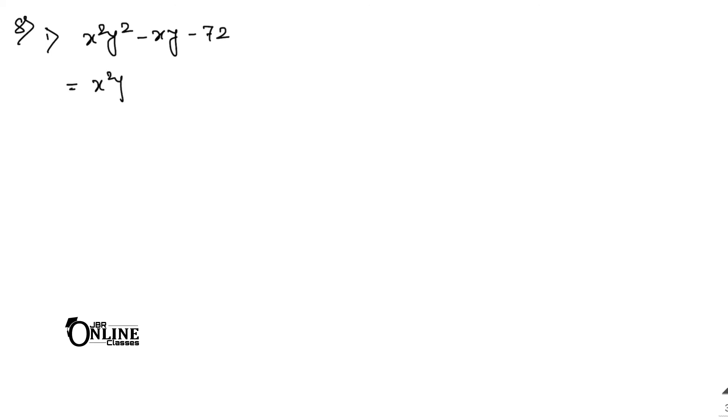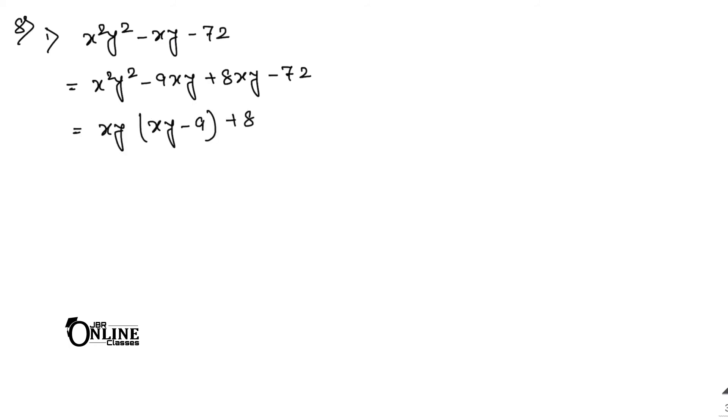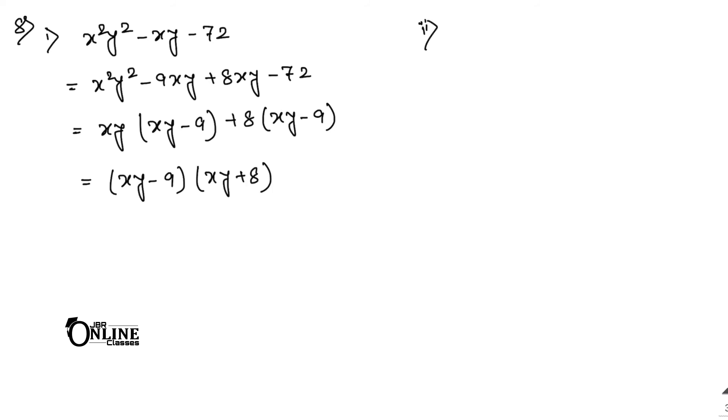Sum number 8.1: x²y² minus xy minus 72. Note 72 = 8 × 9. Rewrite as x²y² minus 9xy plus 8xy minus 72. Common xy from first pair: xy(xy minus 9). Common 8 from second pair: 8(xy minus 9). Answer: (xy minus 9)(xy plus 8).